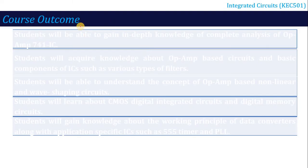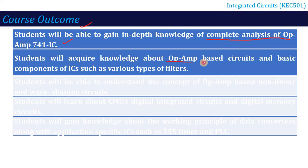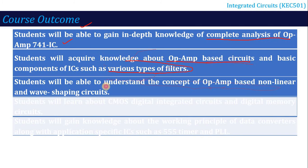The course outcomes after completing this subject are: first, you will learn the complete analysis of the 741 op-amp IC; second, you will be able to create op-amp-based linear circuits, including various types of filters; third, you will learn op-amp-based non-linear and wave-shaping circuits such as peak detector, sample and hold, and other non-linear circuits.